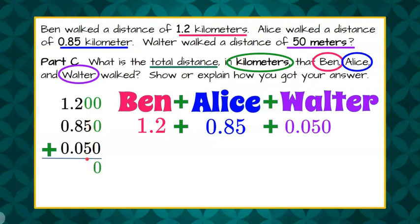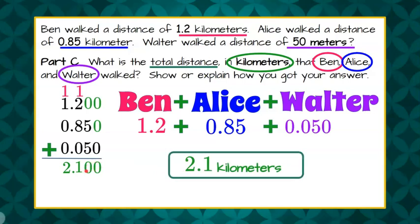So we're going to add all our zeros that are zero. Then 0 plus 5 plus 5 is 10. So 0 and carry our 1. 1 plus 2 is 3 plus 8 is 11, 1 and carry the 1. 1 plus 1 is 2, and bring down our decimal point. So remember, when you add, you line up your decimal point, and you bring it down into where it belongs in your digits. So we have 2.1. We don't need these non-significant zeros at the end. So we know that together, all three, Ben, Alice, and Walter, walked 2.1 kilometers.